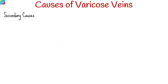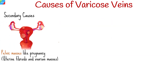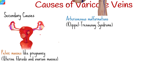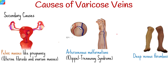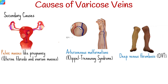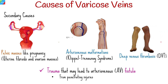Secondary causes include pelvic masses like pregnancy, uterine fibroids, and ovarian masses, arteriovenous malformations like Klippel-Trénaunay syndrome, deep venous thrombosis, and trauma that may lead to arteriovenous fistula resulting from penetrating injuries to contiguous arteries and veins.